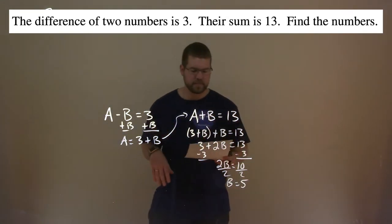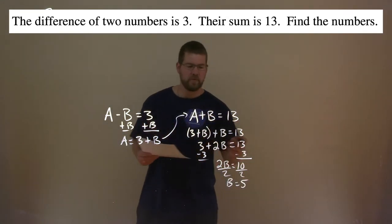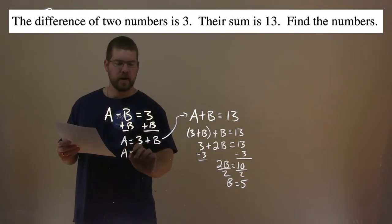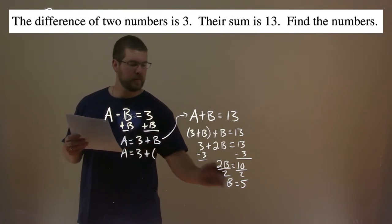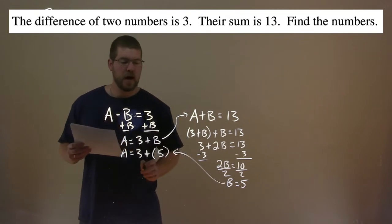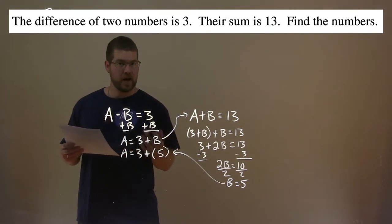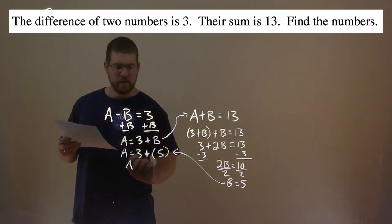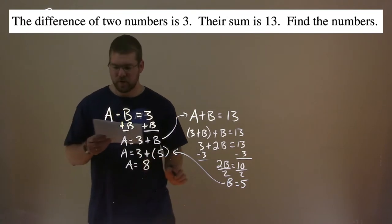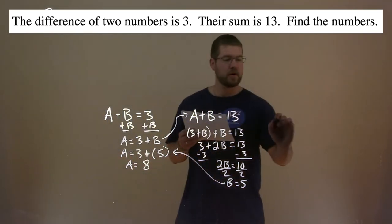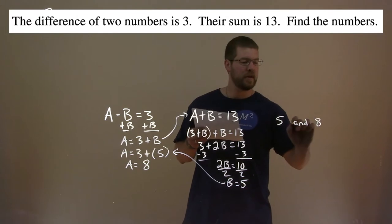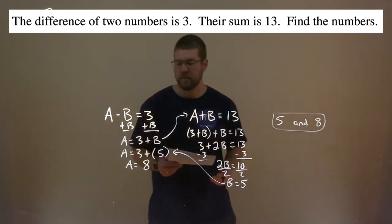10 divided by 2 is 5. With that information, we plug that into B. A equals 3 plus B, which is 5. A equals 3 plus 5, which is 8. So our two numbers are 5 and 8.